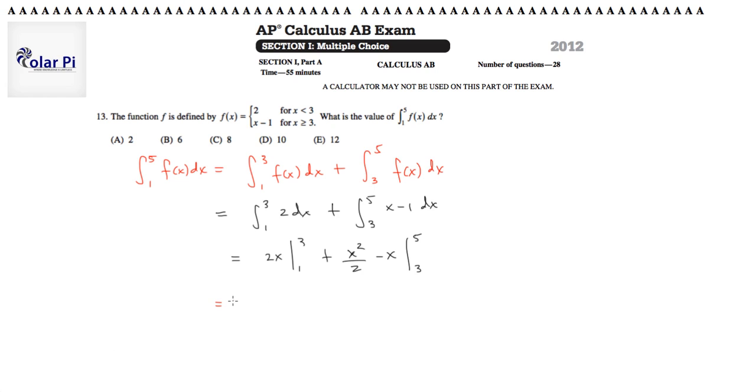By the evaluation theorem, this is 2 times 3 minus 2 times 1, plus 25 halves minus 5, and from this subtract 9 halves minus 3.